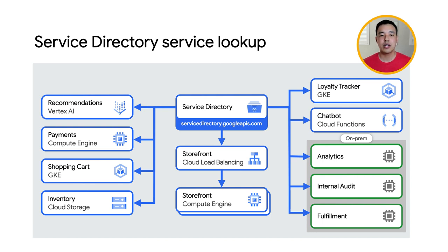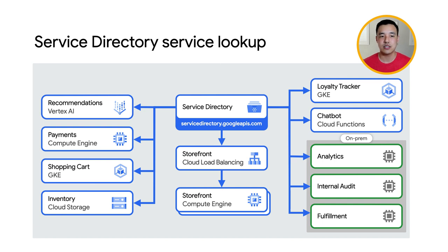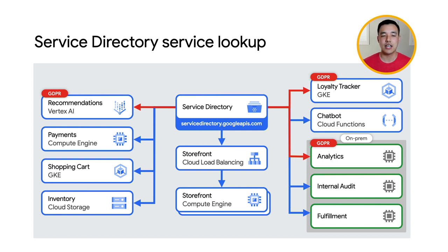Service Directory can be queried via HTTP, gRPC, and DNS. Service Directory also gives you the ability to catalog services. Developers can annotate and search for custom properties on their services. For example, if I'm trying to make a service GDPR-compliant, I might also want to use this information dynamically, to have the service only be allowed to communicate with other GDPR-compliant services.